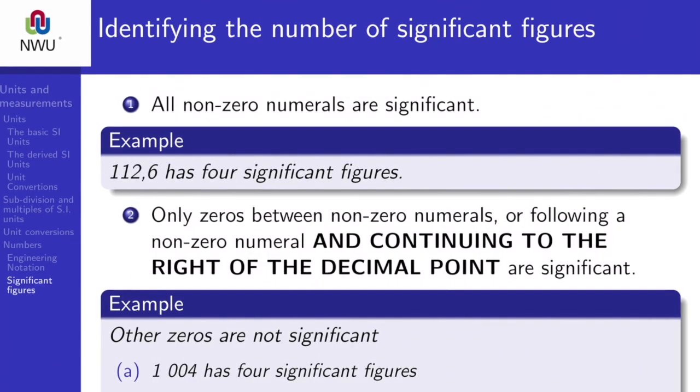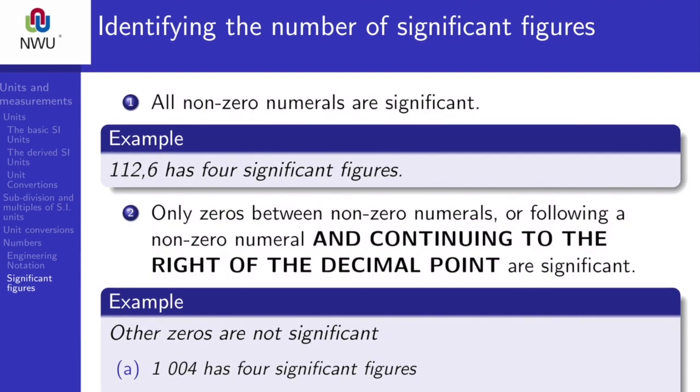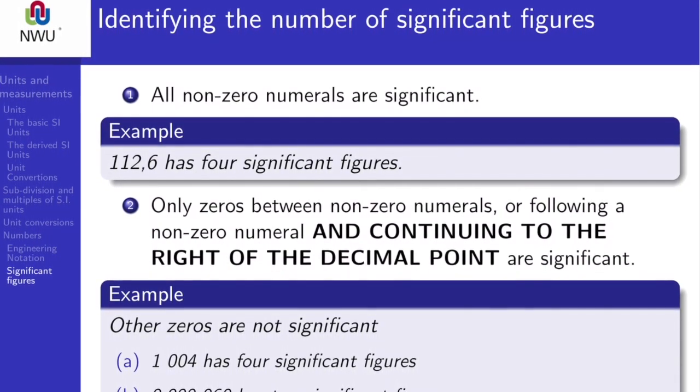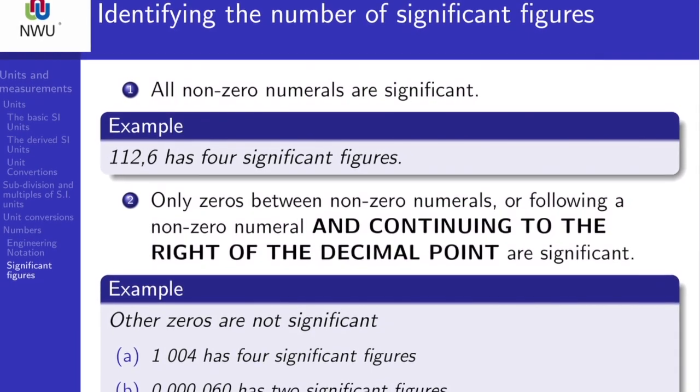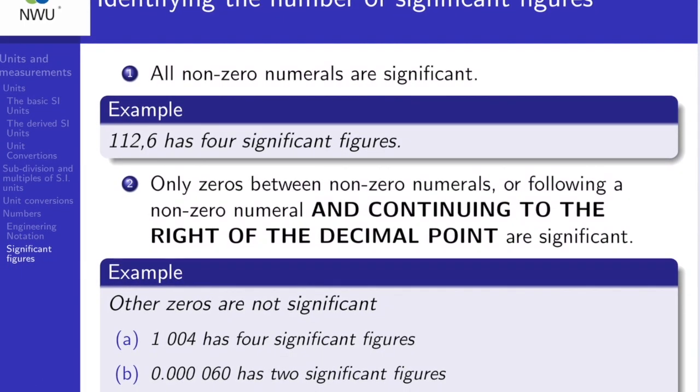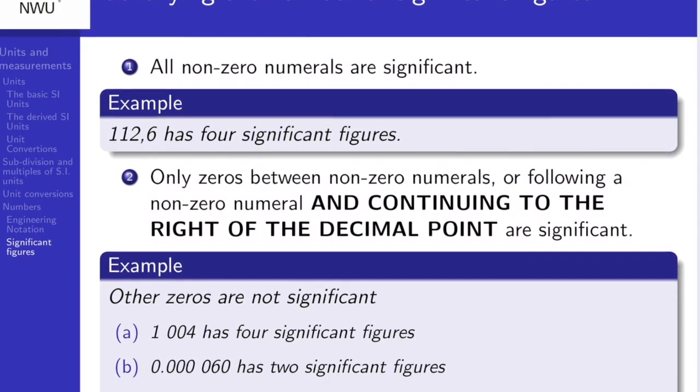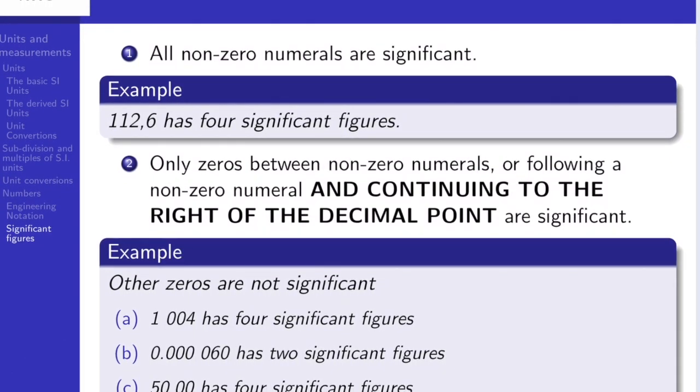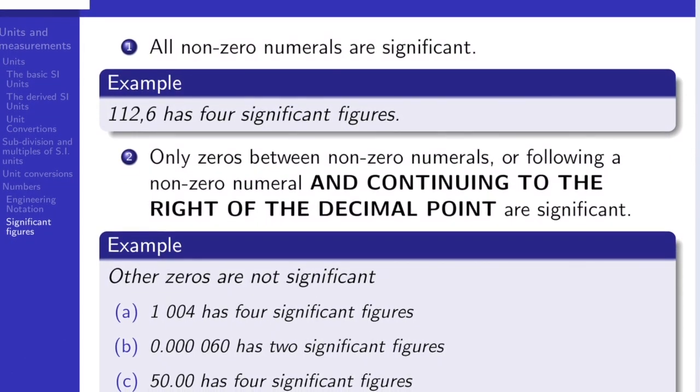Now let's look at significant figures and how accuracy can be established from the number of significant figures in a given number. Okay. Firstly, all non-zero numerals or numbers are significant. Now, for argument's sake, in this example here, 112.6, there are four non-zero numerals.